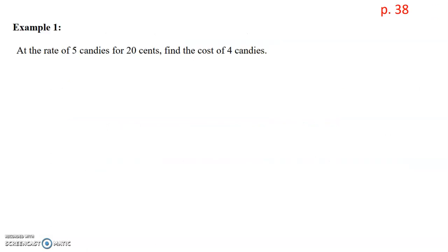Example number one, at the rate of five candies for 20 cents, find the cost of four candies. Okay, so we've got quite a bit of information here. Five candies cost 20 cents. So we want to know our unknown is the cost of the four candies. What's so beautiful about setting a proportion is making our units match. So it doesn't matter the order so much in the way that you set up the proportion. As long as your units are matching, you're going to be doing just fine.